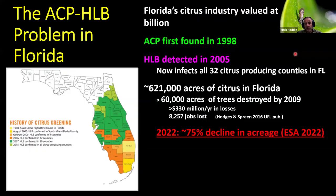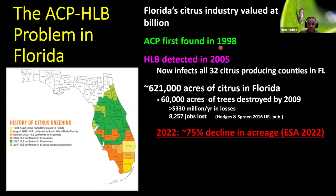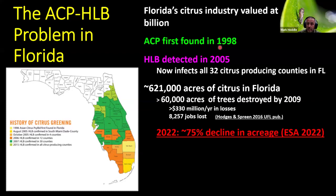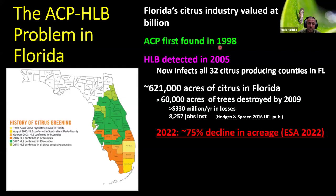The problem of Asian citrus psyllid and Huanglongbing has been particularly severe in Florida. The insect was first found there in 1998, and then the disease was detected in 2005. It's now all through all the citrus-producing counties in Florida. Within the first four years of the disease being detected, about 10% — over 60,000 hectares — of trees were destroyed. Economic losses have been significant: about $330 million a year have disappeared from the citrus industry in Florida, more than 8,000 jobs have been lost. At the Entomological Society of America in 2022, the latest estimates had jumped up to about a 75% decline in citrus-bearing acreage in Florida because of the Huanglongbing problem.